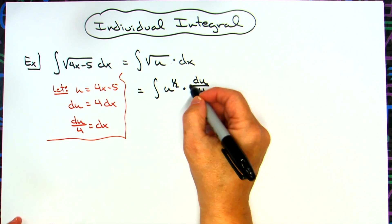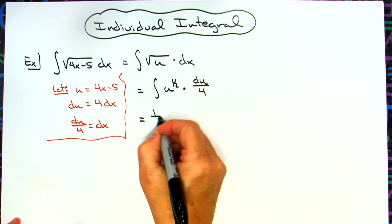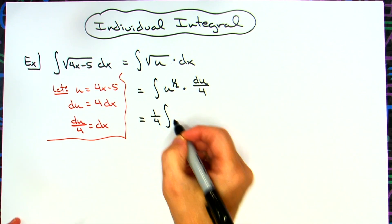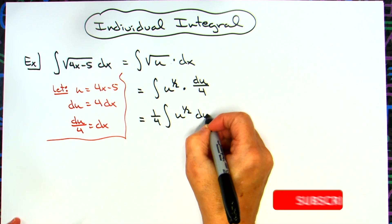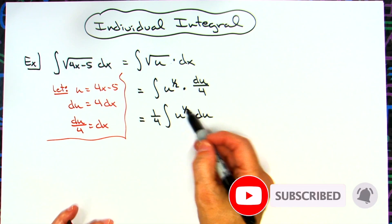We see a 1 fourth right there, so we're going to pull a 1 fourth out in front of the integral. So 1 fourth integral of u to a 1 half. Now we're to a problem here now that we can integrate.